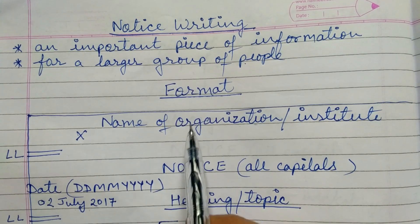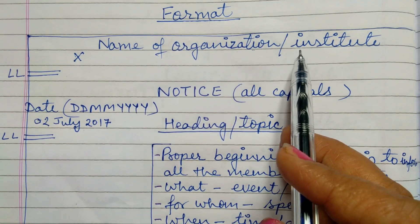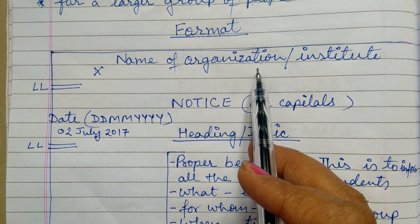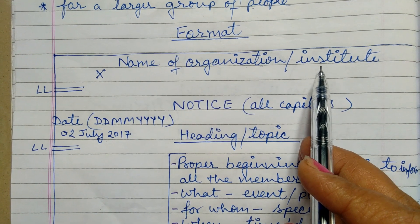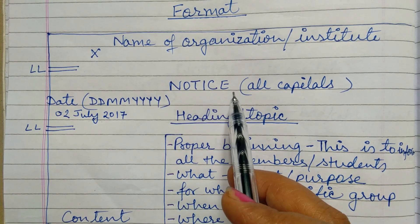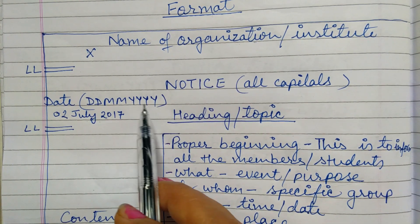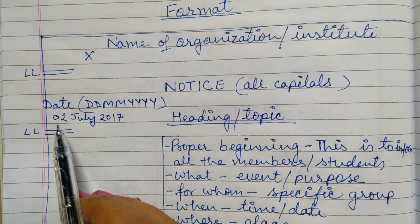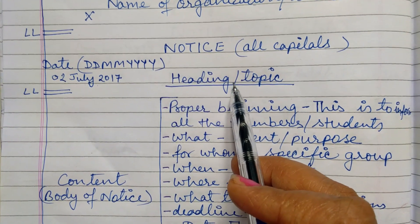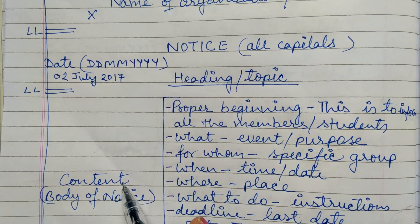Before writing a notice, let's note the format. First of all we will write the name of an organization or institution — it can be any school, any government or non-government body, any resident welfare association or club. After it we will leave a line. Then we will write the word NOTICE in all capital letters. Then we will write down the date, following the British format, for example 2 July 2017. After that we will write the heading or the topic about which we are writing the notice, and then we will begin writing the notice.